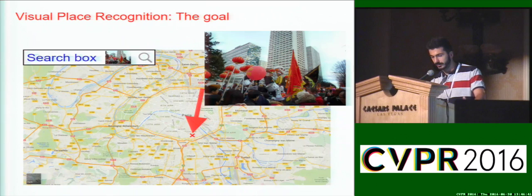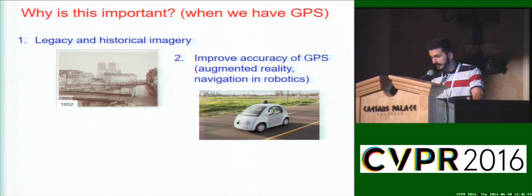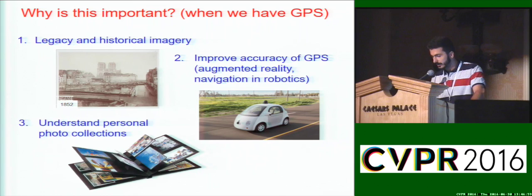Despite the existence of GPS, this task is important in many applications. For example, historical imagery does not have GPS, the accuracy of GPS is often insufficient for augmented reality or robotic navigation, and many personal photo collections still don't contain location metadata.